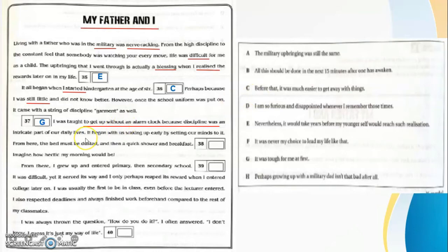Now question 37 starts with: 'It was tough for me at first.' I was taught to get up without an alarm clock because discipline was an intricate part of our daily lives. So that is how you answer the question.